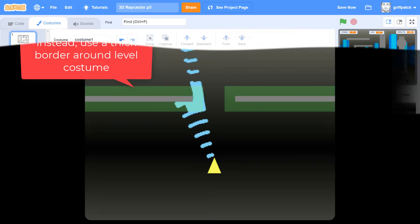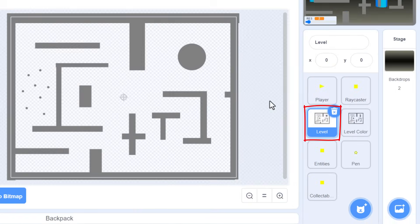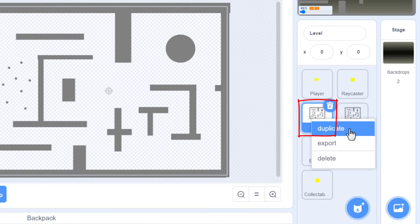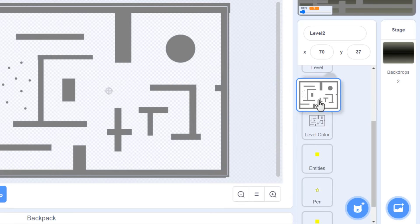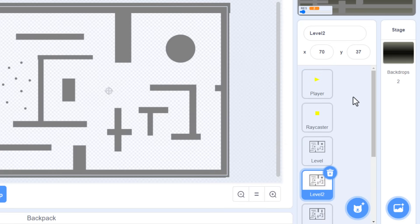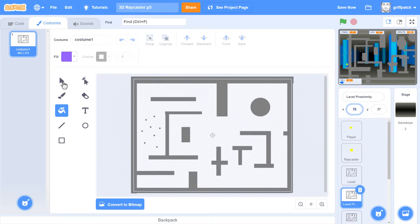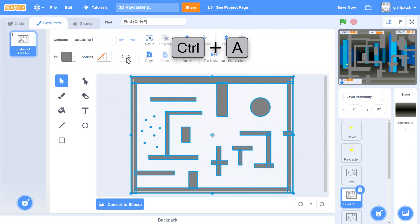And we start by duplicating the level sprite again. Name it Level Proximity. Then, in the costume editor, select all the shapes that make up the level. You can do this by dragging a box around them, or by pressing CTRL and A on your keyboard.